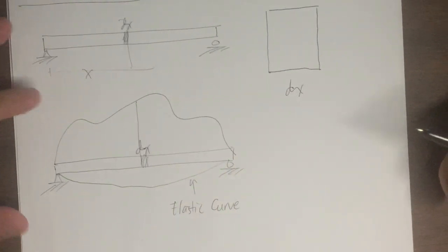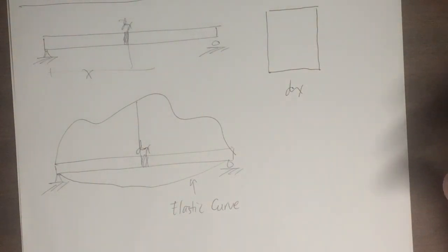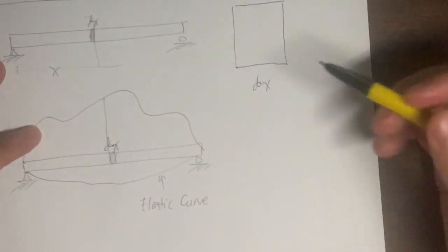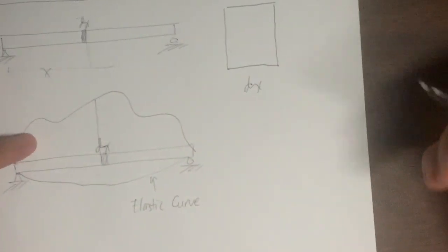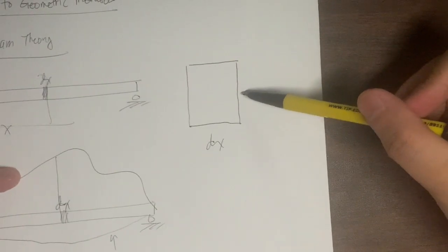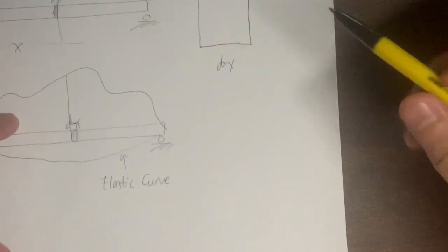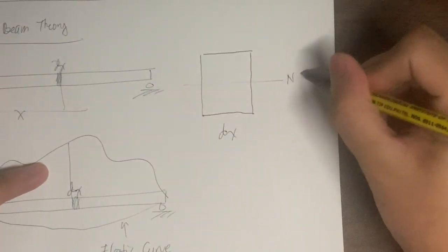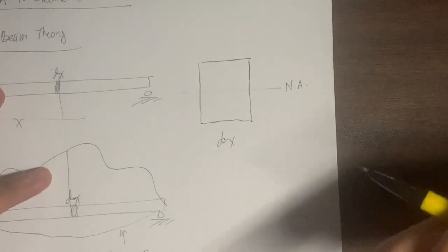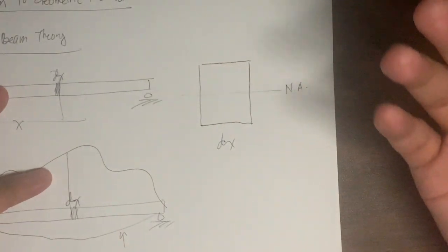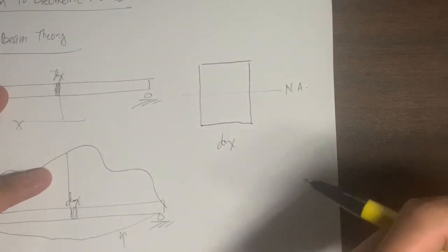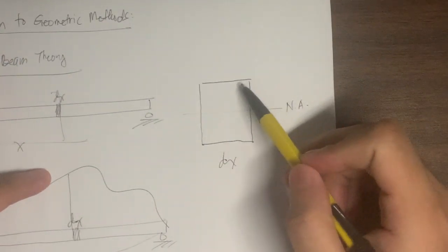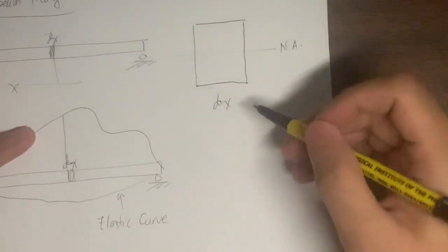The elastic curve is defined as the exaggerated diagram or figure showing the deformation of our structural member or structure. In this case, the beam forms a smile shape. As we all know, if the beam is subjected to positive moment, the upper part of the beam will be subjected to compression and the lower part will be subjected to tension. So the upper part will contract and the lower part will elongate.